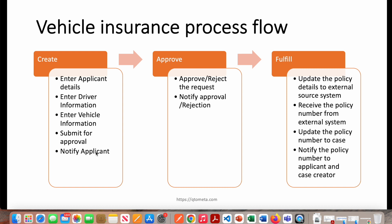After creation of the profile, I mentioned 'Notify Applicant' — this is important. I should get notified that my profile has been created so I can track it. For example, if approval hasn't happened in three or four days, you can call the company with a reference number. That email notification will send the reference number, the case ID of Pega. After approve or reject, we'll notify that your request has been approved or rejected.